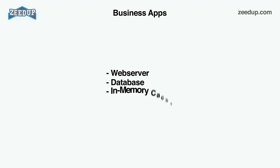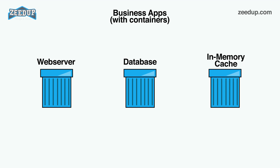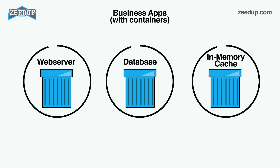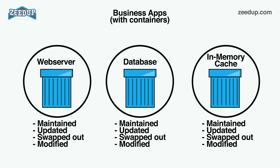Composability: Most business applications consist of several separate components organized into a stack — a web server, a database, an in-memory cache. Containers enable you to compose these pieces into a functional unit with easily changeable parts. A different container provides each piece so each can be maintained, updated, swapped out, and modified independently of the others. Basically, this is the microservices model of application design. By dividing application functionality into separate, self-contained services, the model offers an alternative to slow, traditional development processes and inflexible apps. Lightweight portable containers make it simpler to create and sustain microservices-based applications.